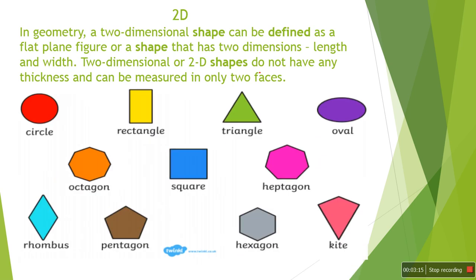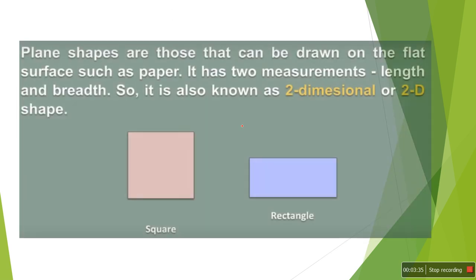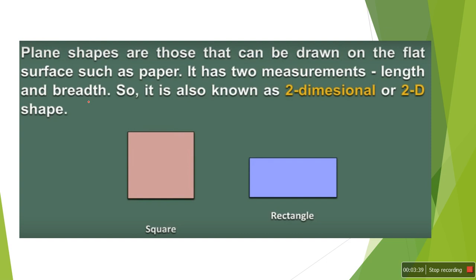Here are some pictures of 2D shapes: circle, rectangle, and triangle. In these shapes you will find only length and width. Plane shapes are those that can be drawn on a flat surface such as paper. They have two measurements — length and breadth — and are known as 2D shapes. Breadth and width are the same thing, so don't get confused. In 2D shapes we find only two dimensions: length and width or breadth.